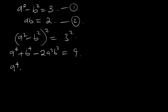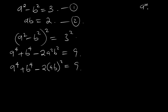So you have a to the power 4 plus b to the power 4 minus 2 times ab squared, equal to 9. According to the law of indices, since the powers are the same, you can bring them together and take them all to the power.